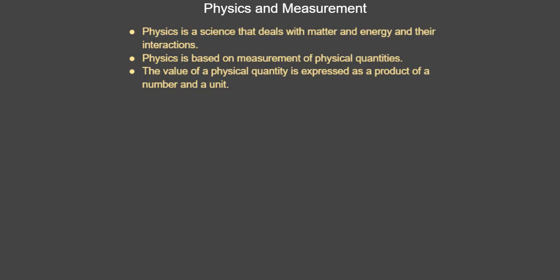How do you express the values when you take measurements of a particular physical quantity? Let's say I told you the time elapsed is 20 seconds. In physics, you write the number — which is the value of that quantity — and the units, which in this case is seconds. We express a physical quantity as a number times the units.